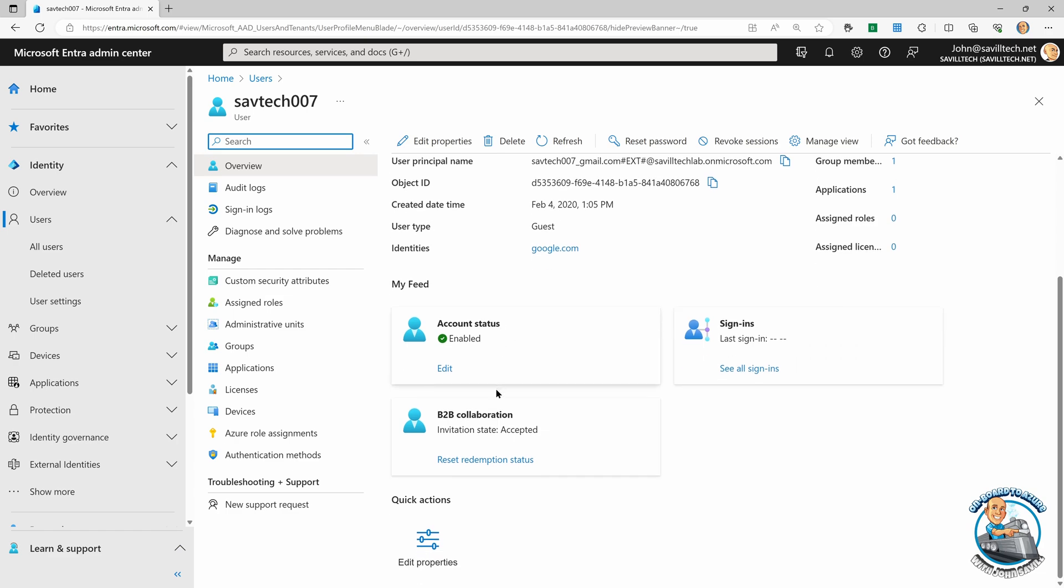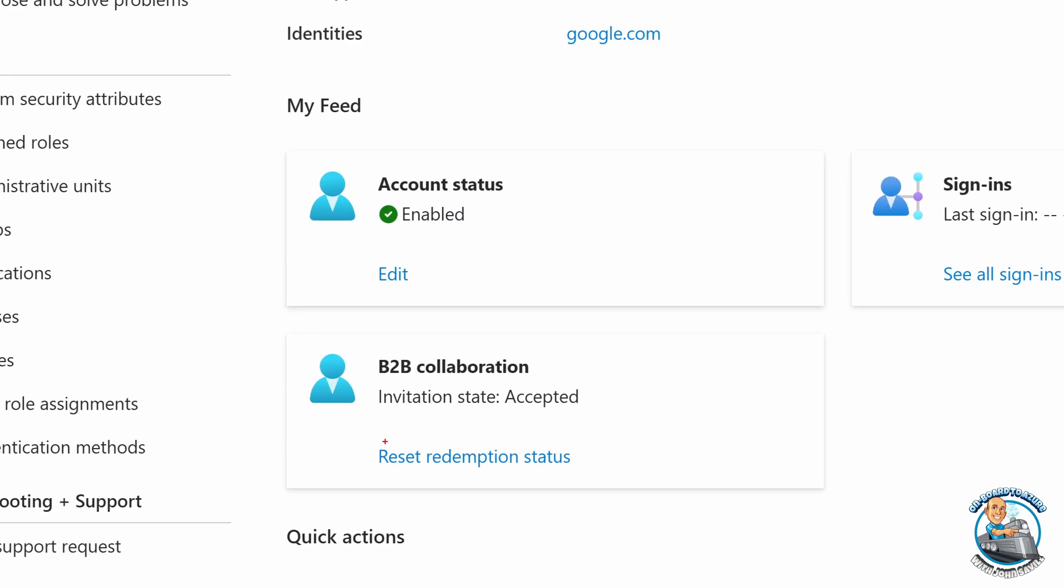We can see now in the B2B collaboration, I've accepted it, but we can do reset redemption status.